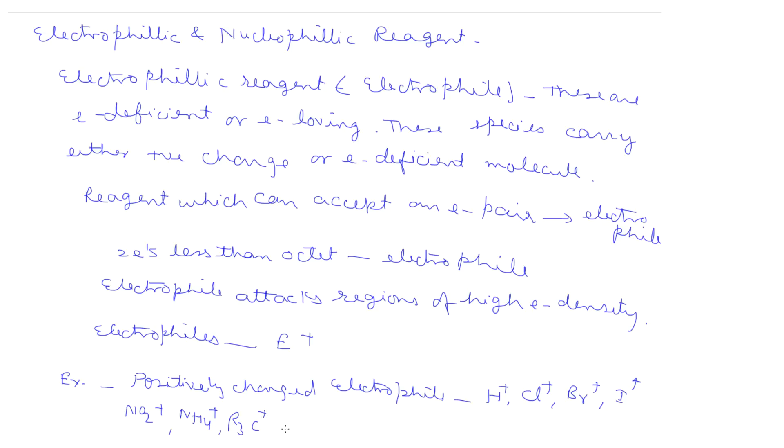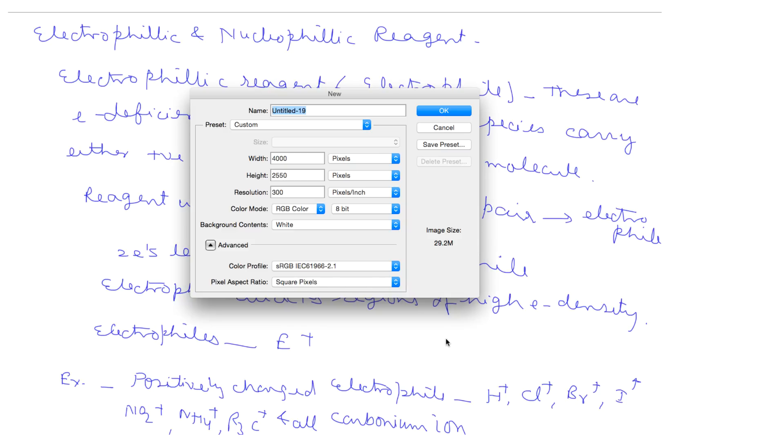R3C plus and all carbonium ions. Now neutral electrophile, these are also electron deficient. Example: SO2, FeCl3, AlCl3 aluminium chloride, BF3, ZnCl2 etc.